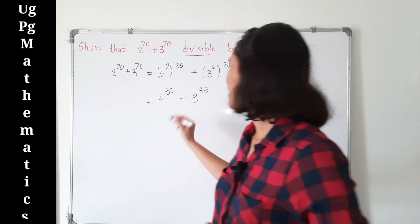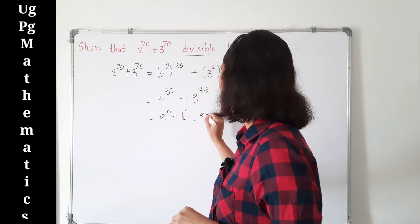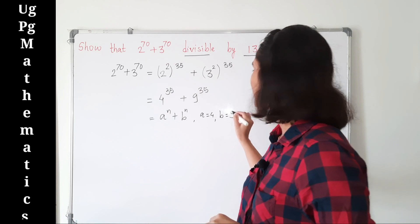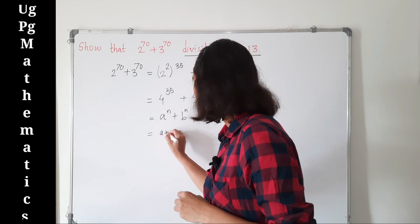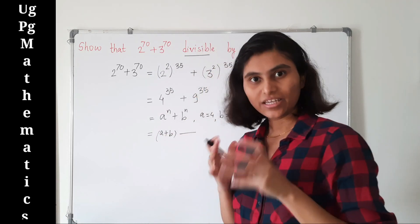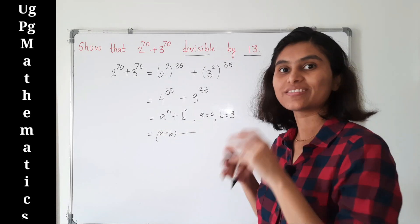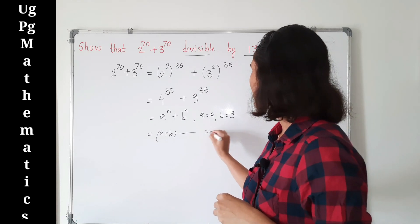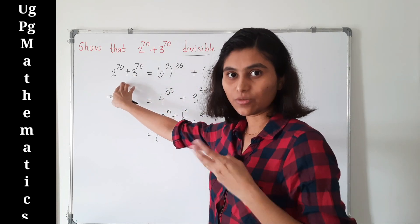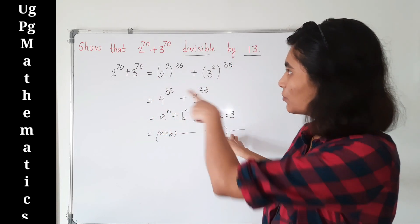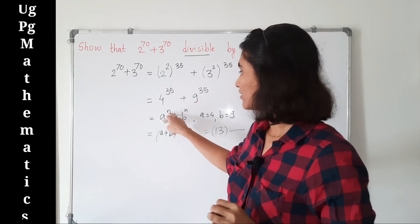This number is now in the form a raised to n plus b raised to n, where a is 4 and b is 9. If we can write this as (a plus b) times something, then we are done, because a plus b is 4 plus 9 which is 13. That means this equals 13 times something, so 13 is a factor and the number is divisible by 13.